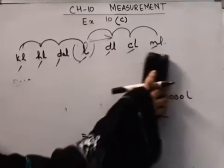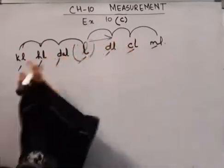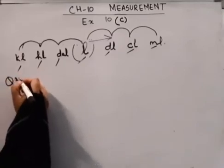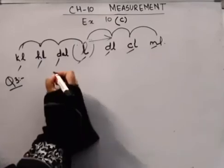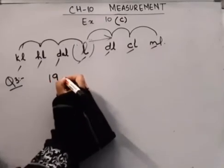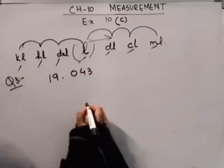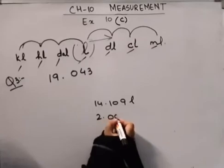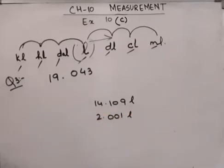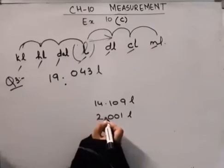Now we'll do question number 3. First of all, you should definitely make this table, it makes it easy. Question number 3 is, we have to add these numbers which are given in liters. First is 19.043, second is 14.109 liters, and third is 2.001 liters. I told you how to add numbers given in decimal form. What will I do? When I write the next number, I will write decimal below decimal.